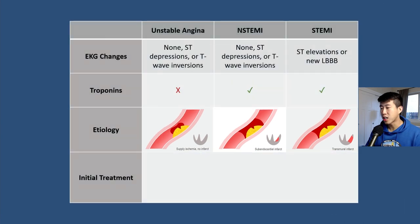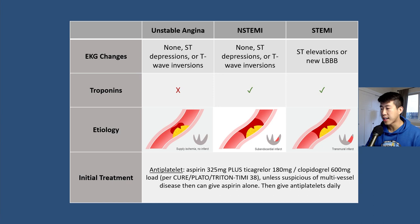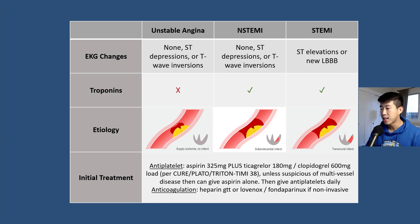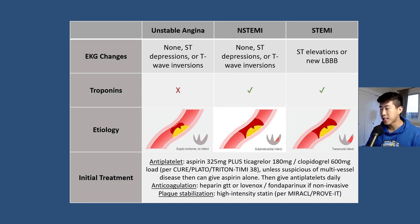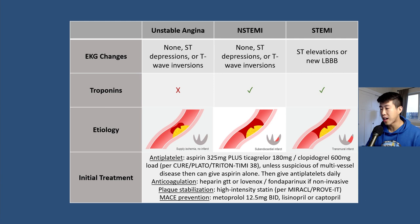The initial treatment of acute coronary syndrome is the same across all three conditions. It revolves around antiplatelet therapy, anticoagulation, plaque stabilization, and major adverse cardiac event prevention.